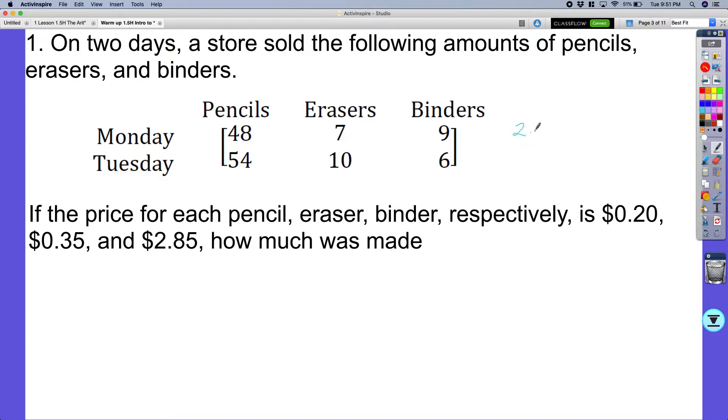Remember, two rows, three columns. And if the prices for each pencil, eraser, and binder are $0.20, $0.35, and $2.85, how much was made?